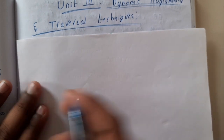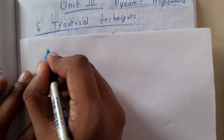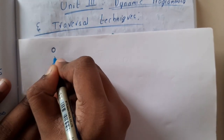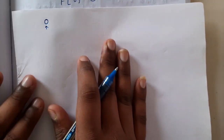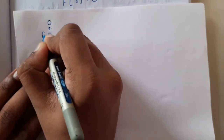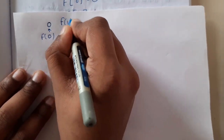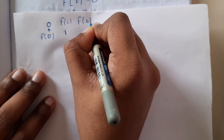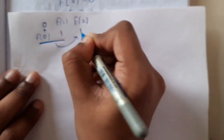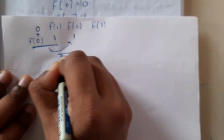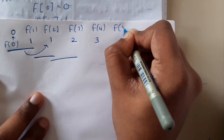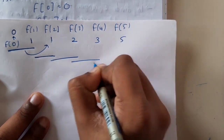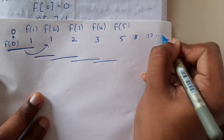Let's start with the Fibonacci series. Fibonacci of 0 is always 0, Fibonacci of 1 is always 1. From index 2 onward, each value is the addition of the previous two: Fibonacci(2)=1, Fibonacci(3)=2, Fibonacci(4)=3, Fibonacci(5)=5, and so on — 8, 13 — and in this way the Fibonacci series continues.